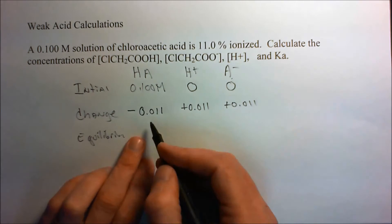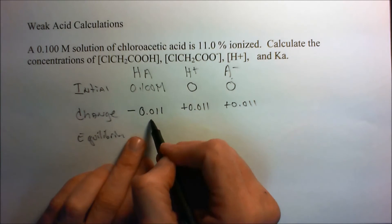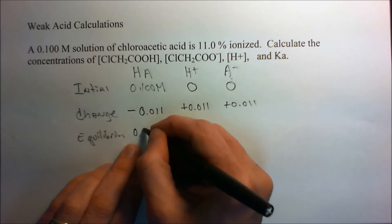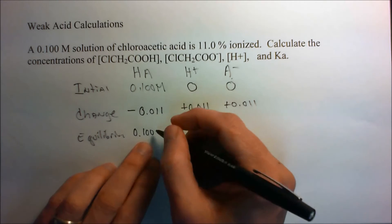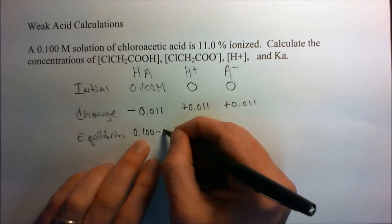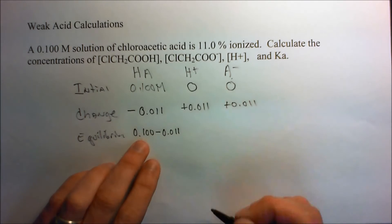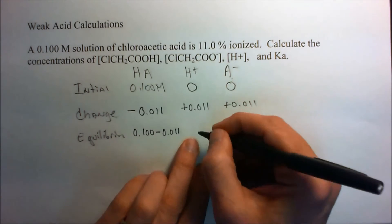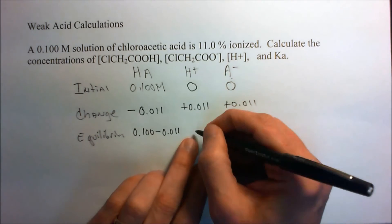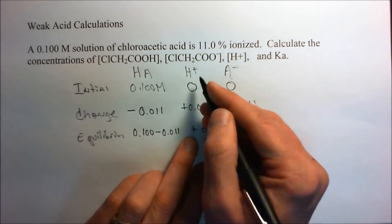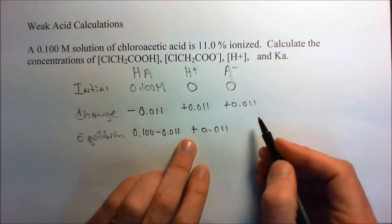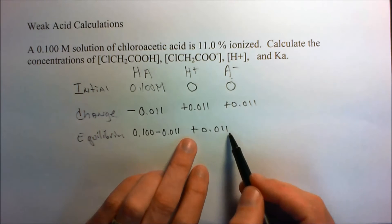So the final concentration here is going to be this minus that. That's the equilibrium concentration. So 0.1 minus 0.011. This is going to be zero plus that, so we just carry it on down. So the concentration for both the H plus and the conjugate base is going to be 0.011.